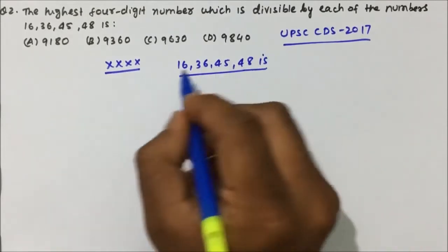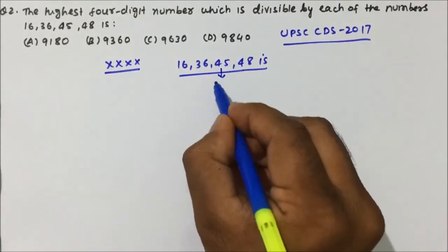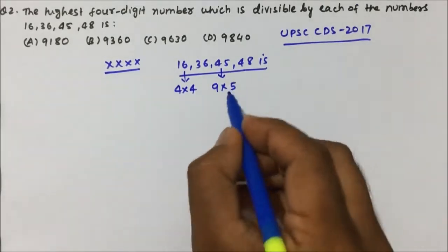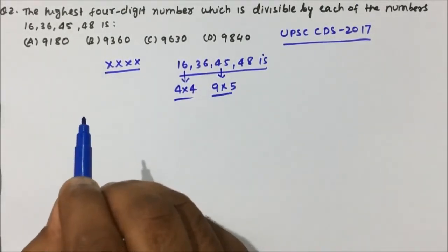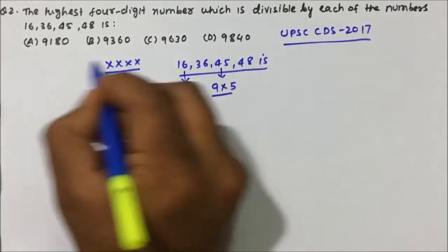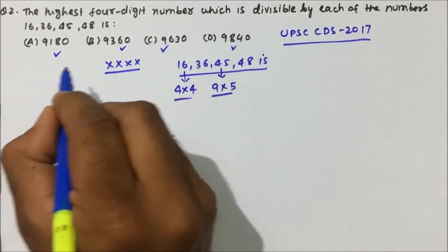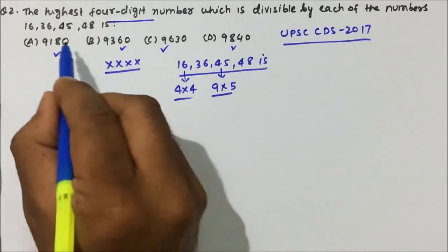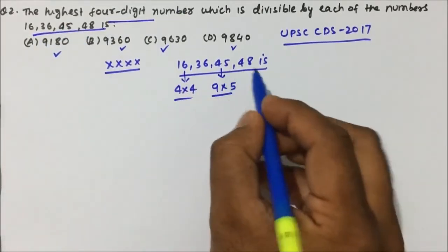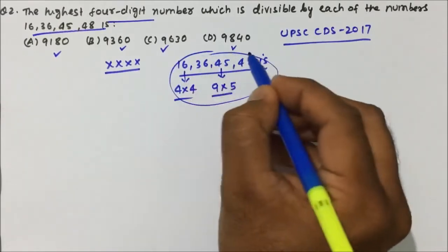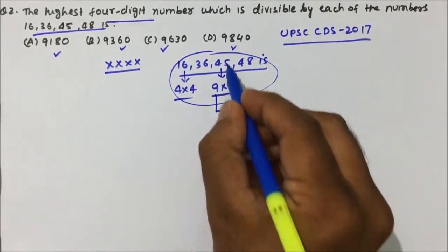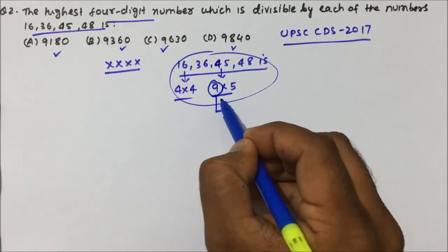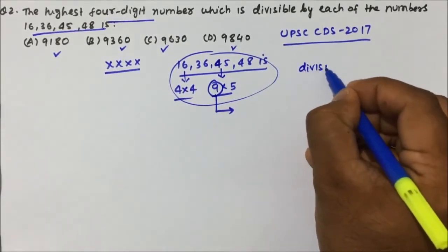We will solve this by options only. Before that, one important observation: 45 is a multiple of 9, and 16 is a multiple of 4. So if a number is divisible by 45 then it must also be divisible by 9. There are 4 options — A, B, C, D — and we need to find which is the highest 4-digit number divisible by all four numbers.